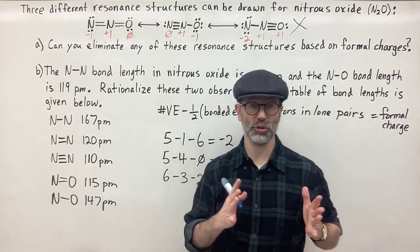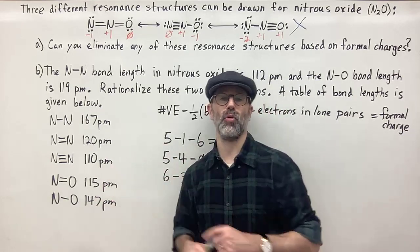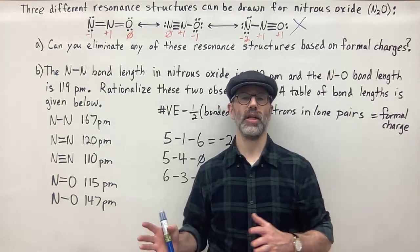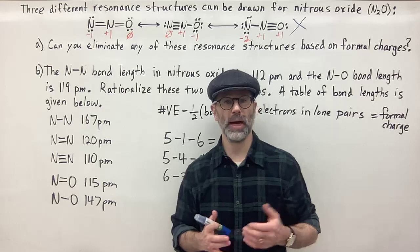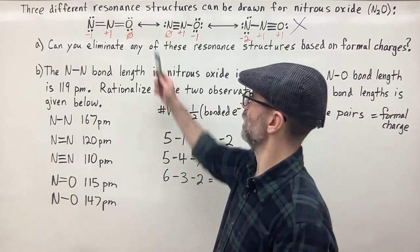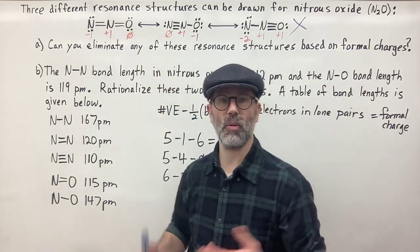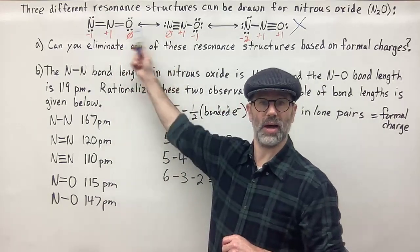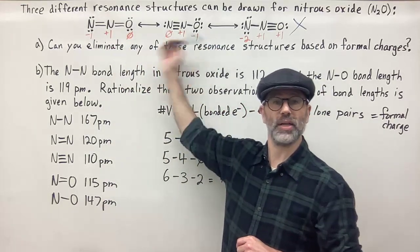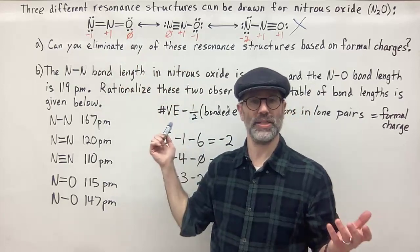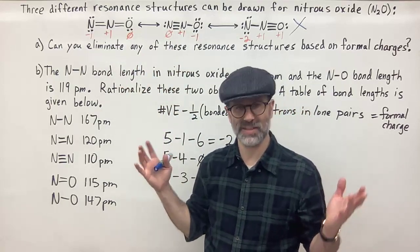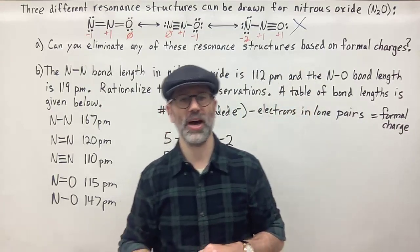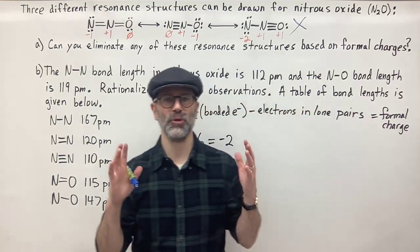So oxygen leans toward double bond character and nitrogen leans toward triple bond character. As for the middle nitrogen, no matter which resonance structure you look at, it always has four bonds — so the middle nitrogen doesn't have a choice. That's it for this video; I hope that was helpful.